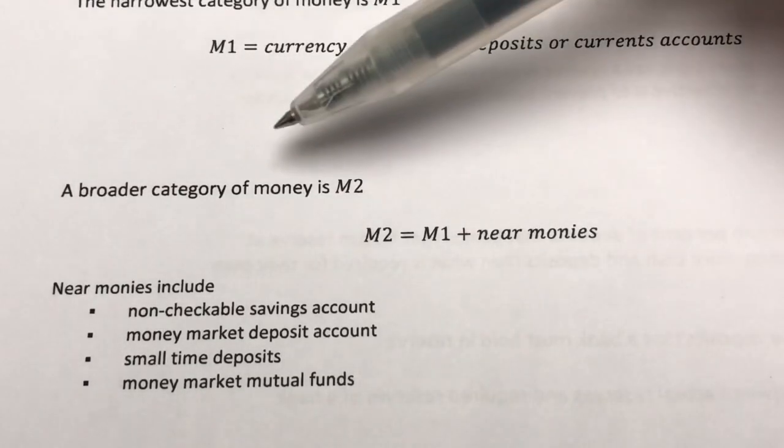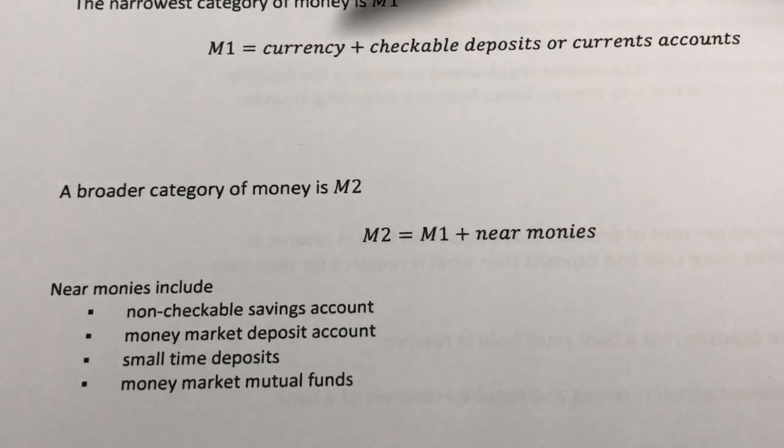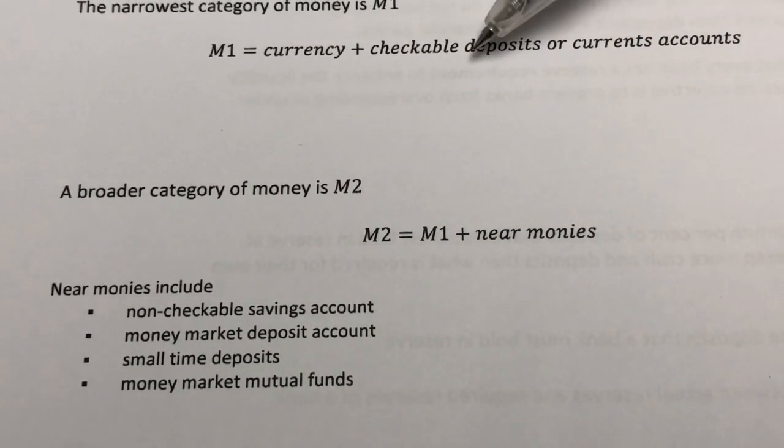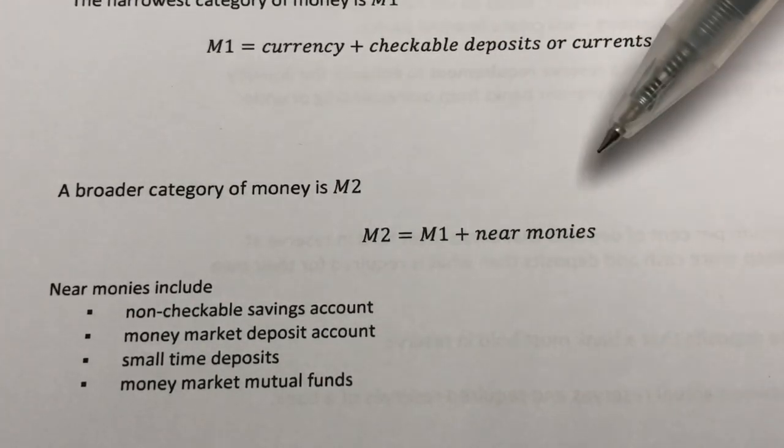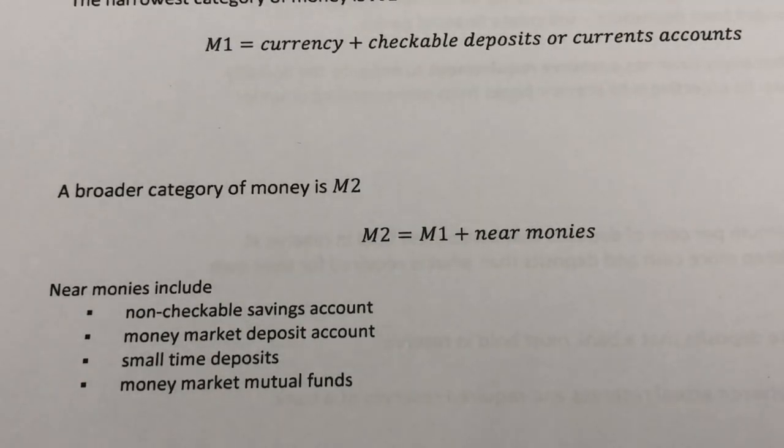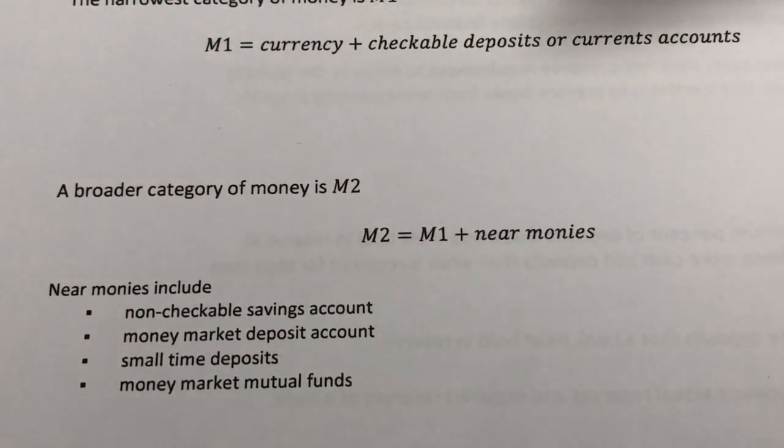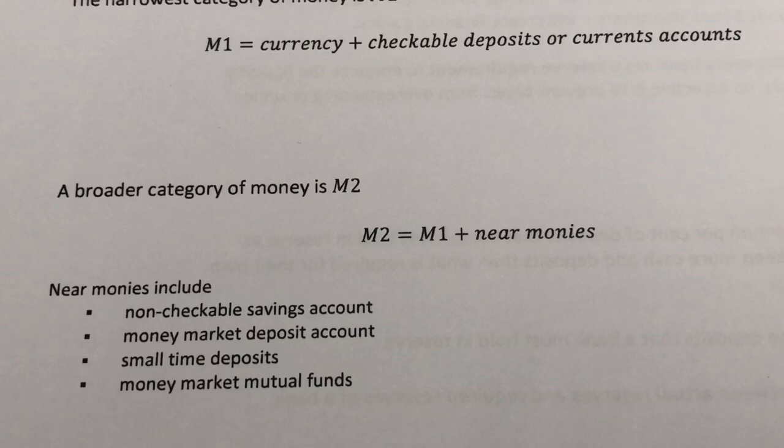A broader category of money is called M2. M2 consists of M1, which are these items previously mentioned, and things called near monies. Once we start to consider balances in bank accounts as part of money supply, we can expand the scope and consider other accounts that people hold at banks and other financial institutions. These balances in other accounts are non-cash assets that are highly liquid and easily converted to cash. Hence, that is why they're called near monies or narrow quasi-money or cash equivalents.